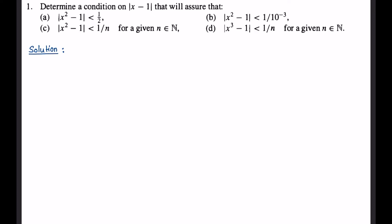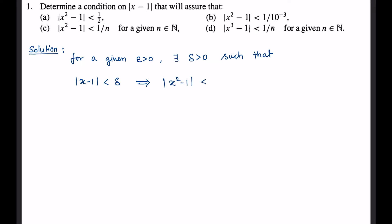This problem asks to find the condition on mod so that the following inequality holds. This problem is based on the epsilon-delta definition of the limit of a function, which says: for a given epsilon greater than 0, there exists delta greater than 0 such that |x - 1| < delta implies |x² - 1| < epsilon.